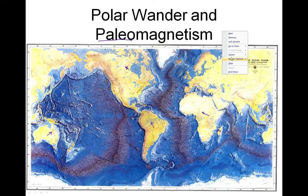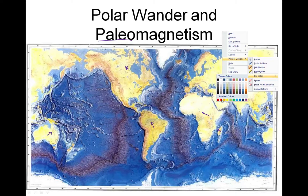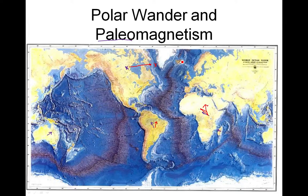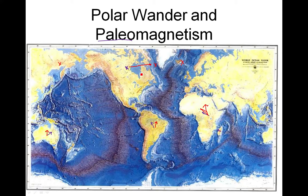Then they looked at rocks that were older — say, 10 million years ago. They thought the iron would point to the current North Pole. Well, it didn't. In South America the rocks pointed somewhere else. In Africa, 10 million years old, they pointed somewhere different. In Australia the same age rocks pointed yet another direction. In Madagascar they pointed somewhere different again. So they found what appeared to be lots of different North Poles — which is impossible. They threw out their work, thinking something must have been done wrong.